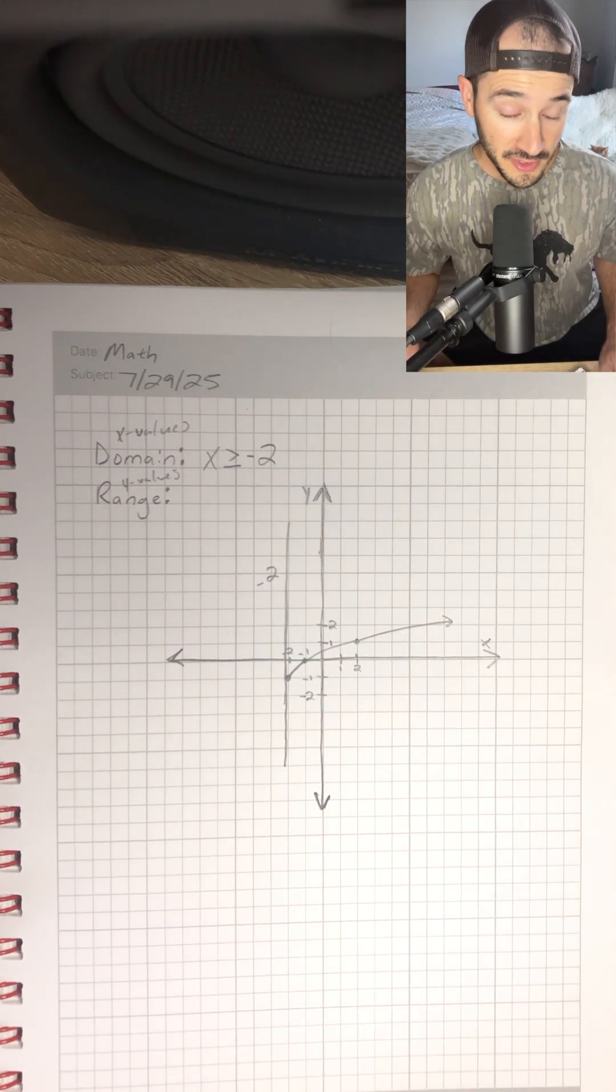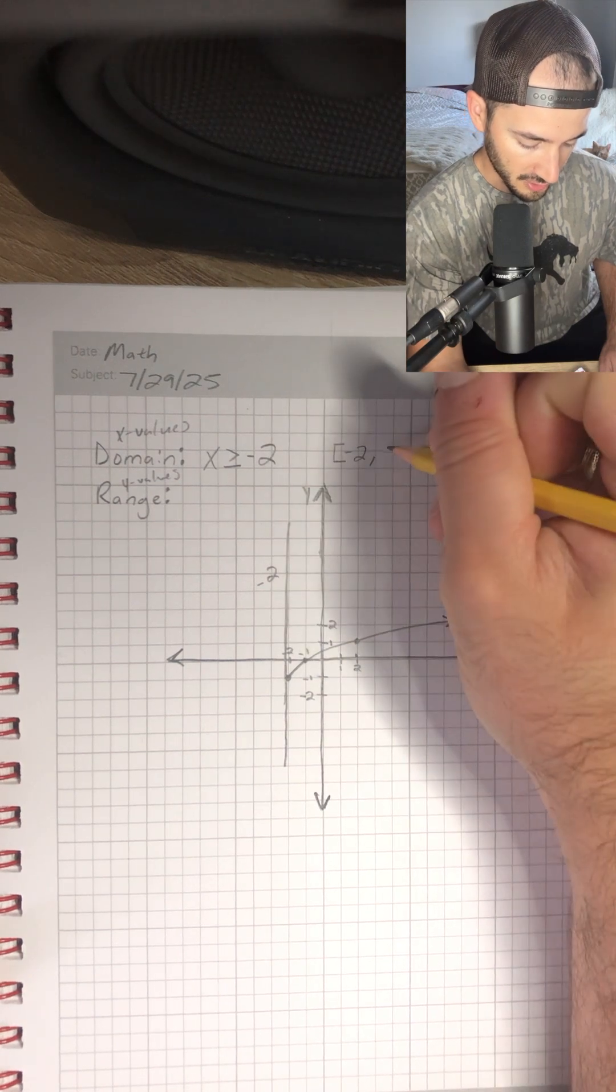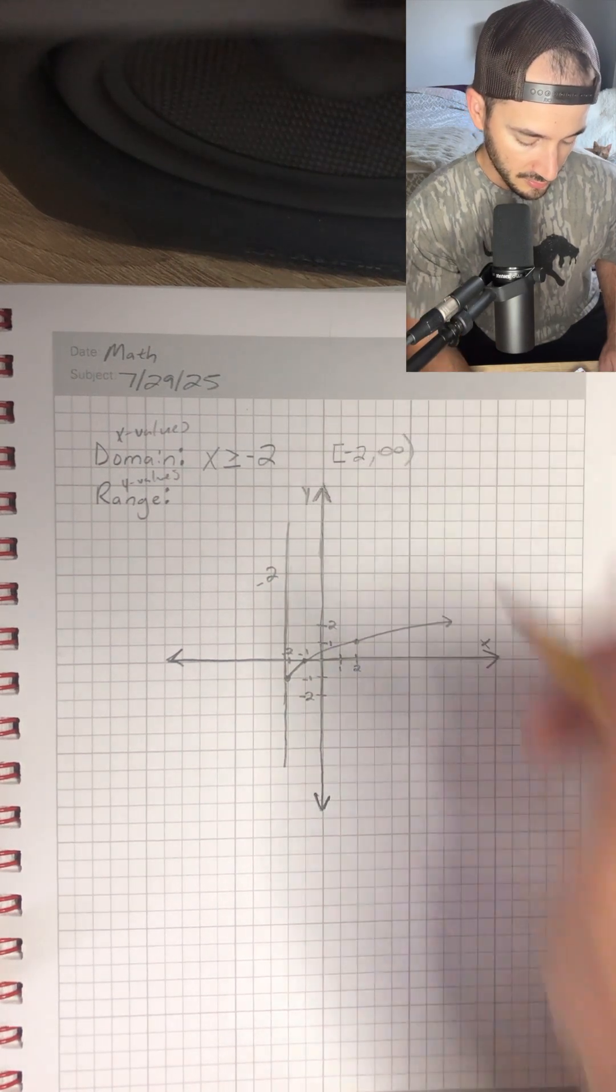If you wanted to write that in interval notation, you would write bracket negative 2 comma infinity with your parentheses.